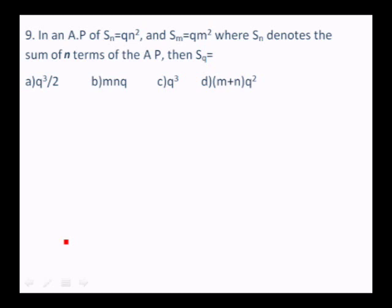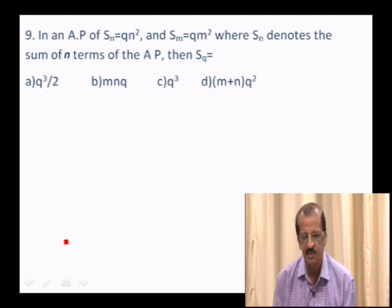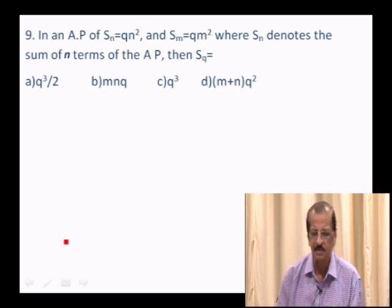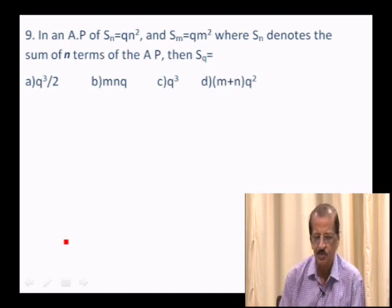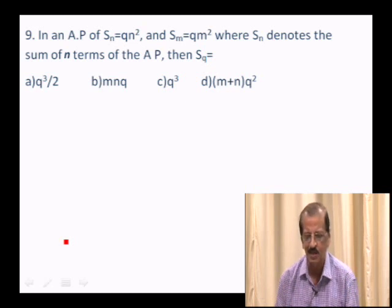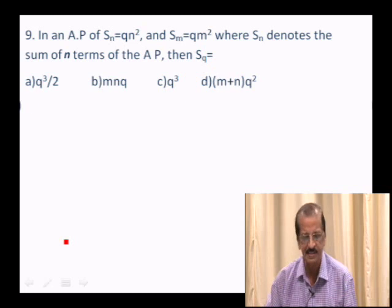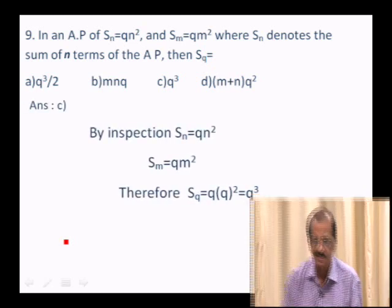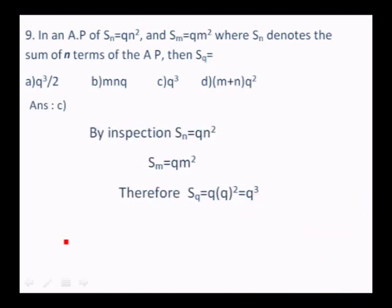Question 9: In an AP, Sn = QN² and Sm = QM². Find SQ. By the pattern, SQ = Q × Q² = Q³. Answer: Q³.